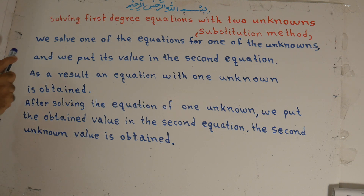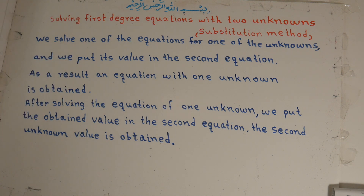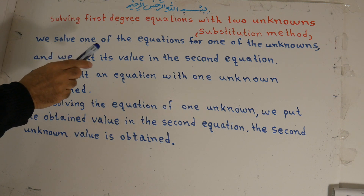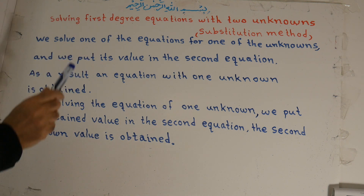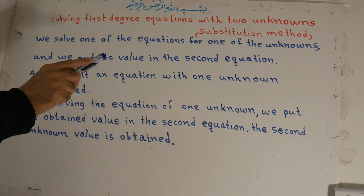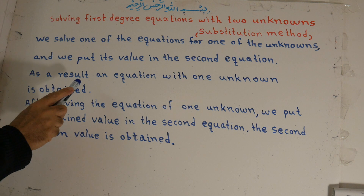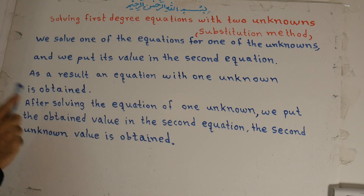For the substitution method, what we do is we solve one of the equations. There are two equations because this is with two unknowns. For two unknowns, we have two equations. We solve one of the equations for one of the unknowns — it doesn't matter for x or y. And we put its value in the second equation. As a result, an equation with one unknown is obtained.